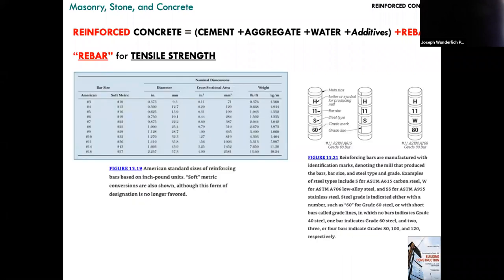Here are figures from the building construction textbook showing the different rebar sizes — numbers three, four, five — which correspond to diameter, and what the weight in pounds per foot is. You can also see how rebar is labeled in the image on the right, so you know exactly what you've got in your hand when you're looking at a piece.